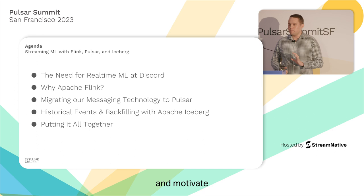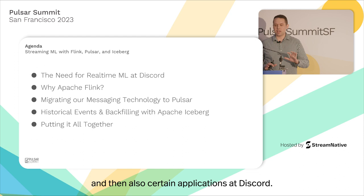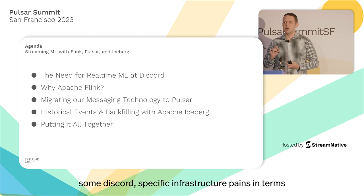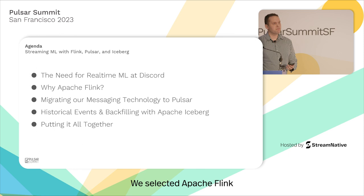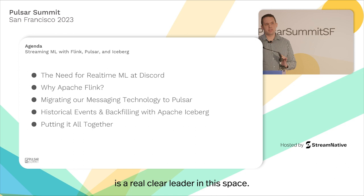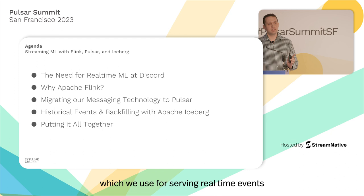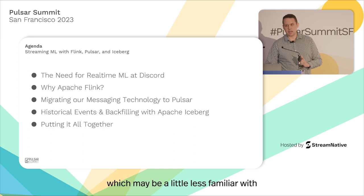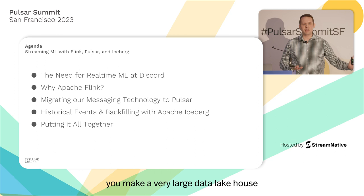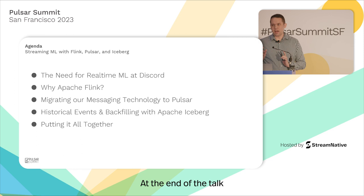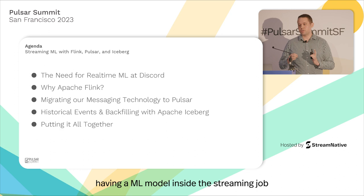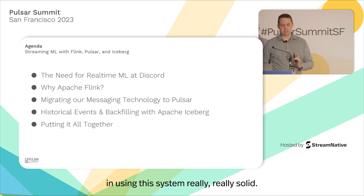Here's the agenda: I'll talk about Discord, what it is, and motivate why people are interested in real-time streaming and certain applications at Discord. I'll discuss Discord-specific infrastructure pains in using machine learning that this platform will help address. We selected Apache Flink for this platform, and I'll describe why Flink is a clear leader in this space. We'll cover Pulsar, which we use for serving real-time events, and Iceberg — a cloud storage format that lets you build a streaming-friendly data lakehouse. Finally, we'll put it all end-to-end, taking raw data, making sophisticated features, running an ML model inside the streaming job, and outputting scores.